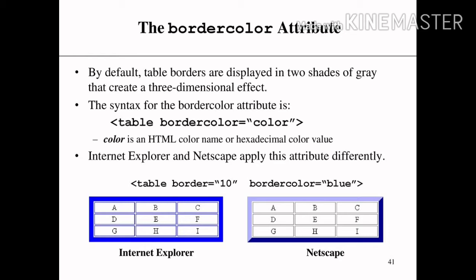The syntax for the border color attribute is: table bordercolor equals to color. Color is an HTML color name or a hexadecimal color value.